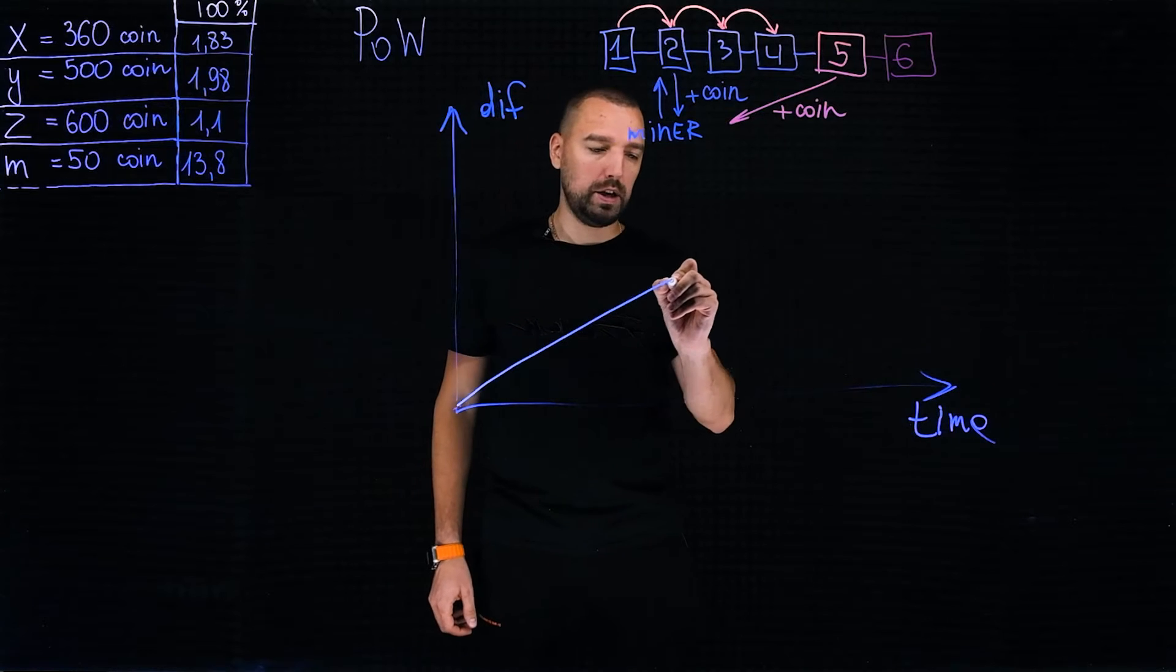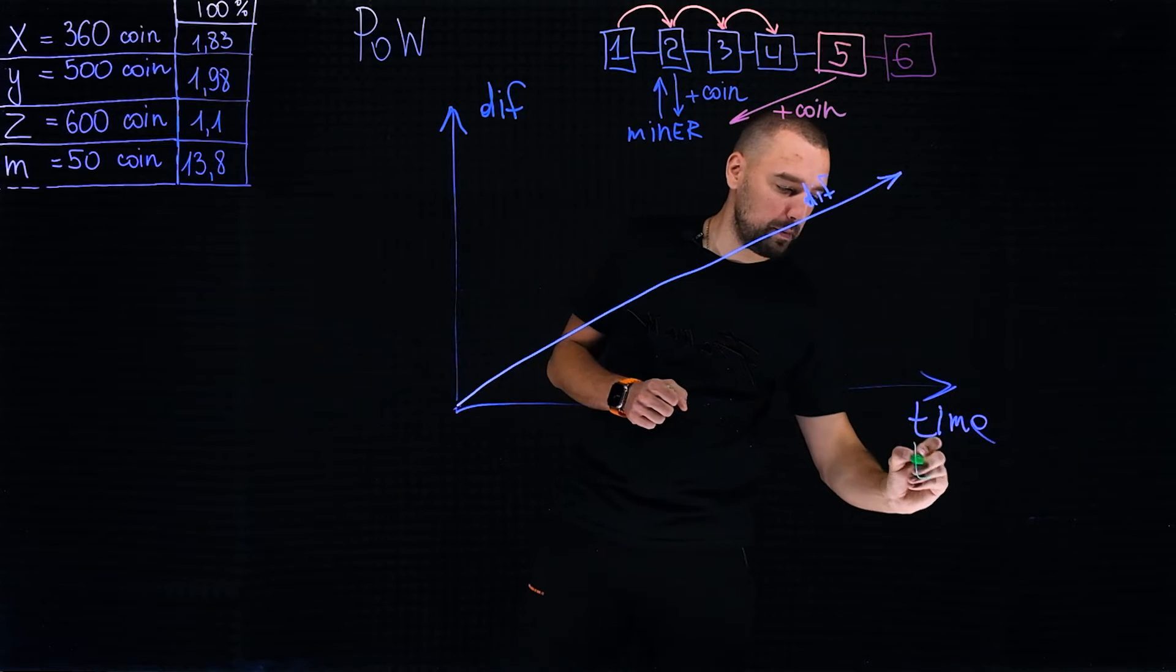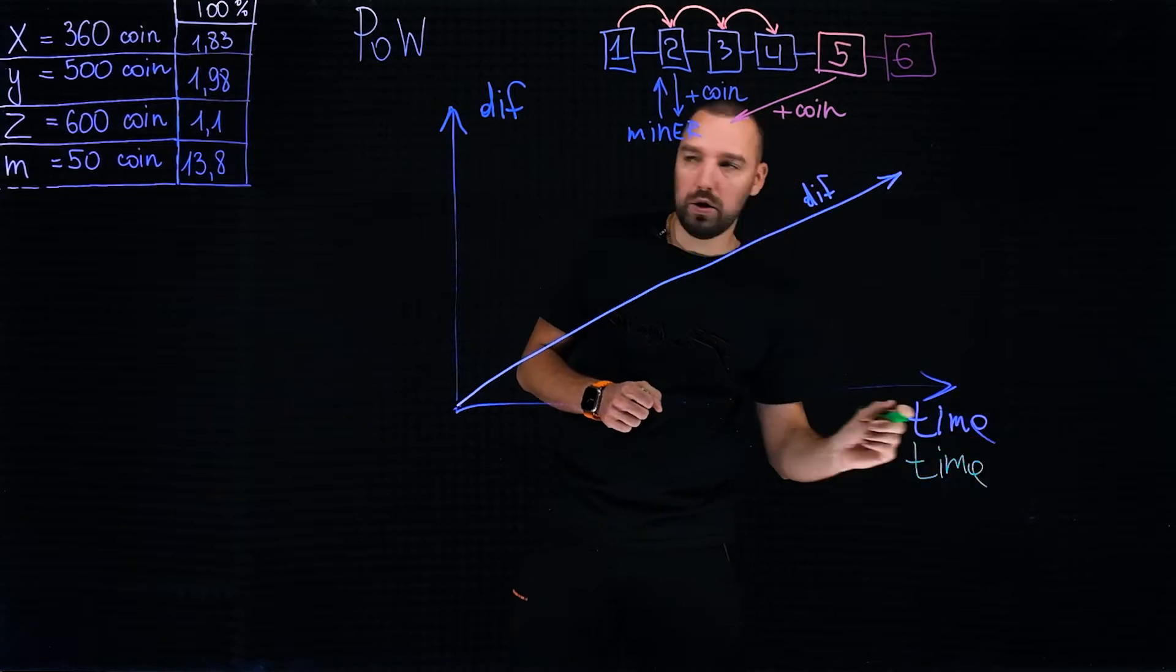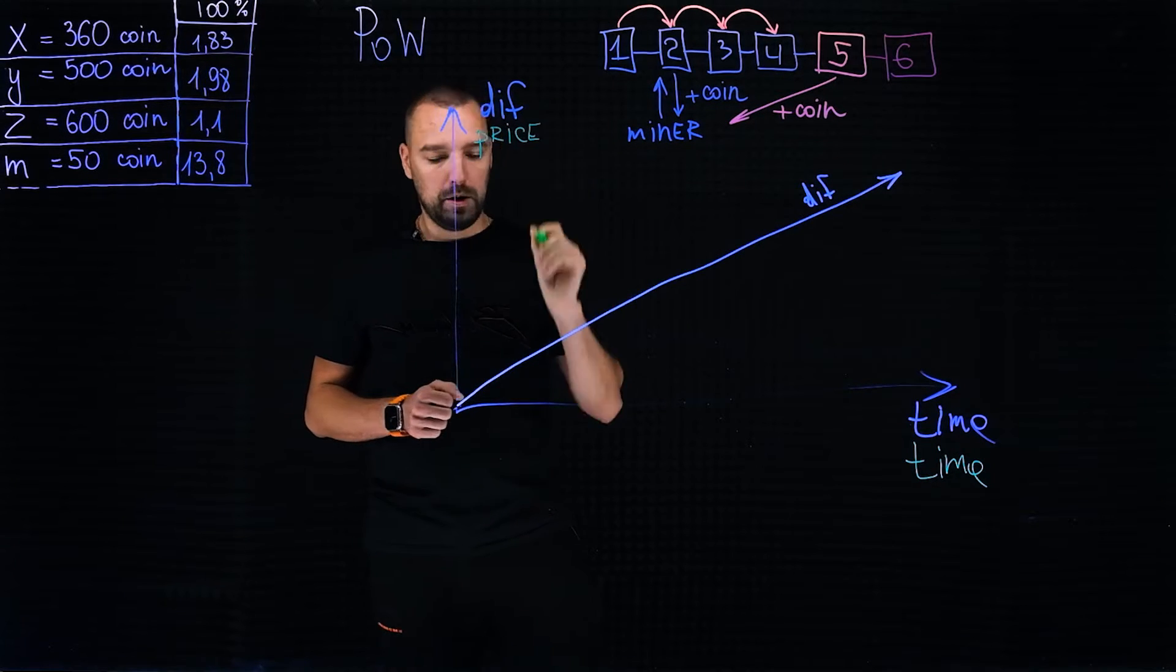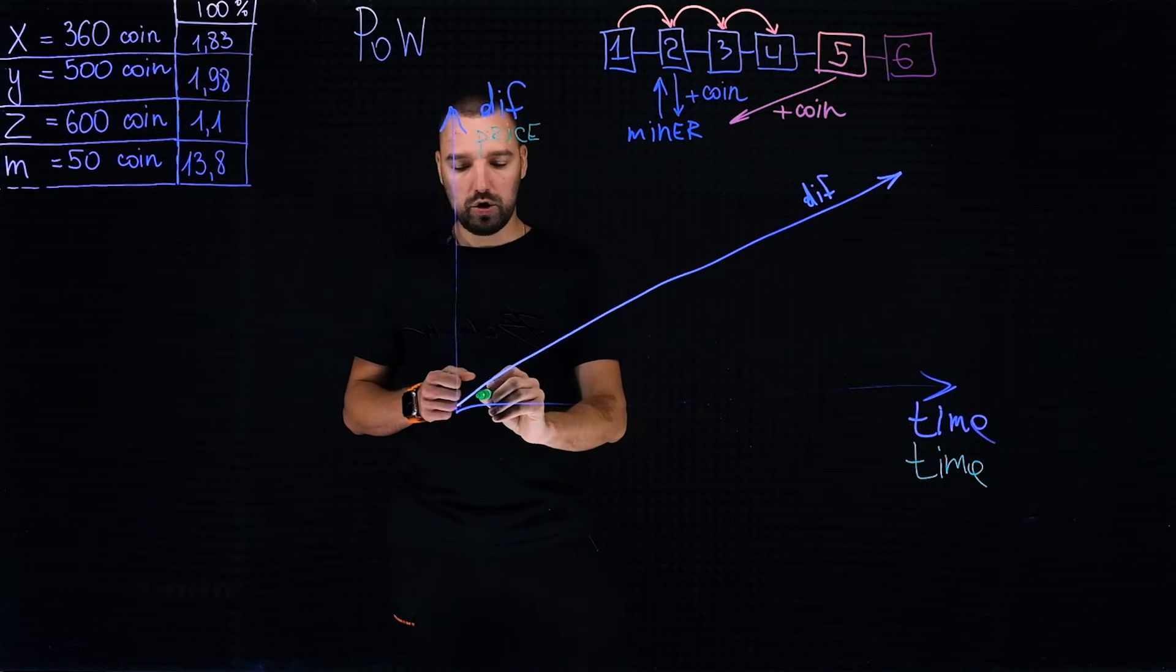The complexity is constantly growing. We will also have the time parameter, but here we will already have the value of the coin. Then we can pay attention that any coin can have ups, there can be downs, ups, downs, and so on.